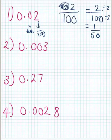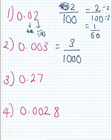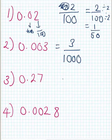For number 2, there's no whole number. How many decimal places? One, two, three — so the denominator has three zeros, giving us one thousand. Three is in the thousandths column, so the answer is 3 out of 1000. For number 3, how many decimal places? One, two — so it will be out of a hundred. The numbers two and seven go on top to give us 27 out of 100.